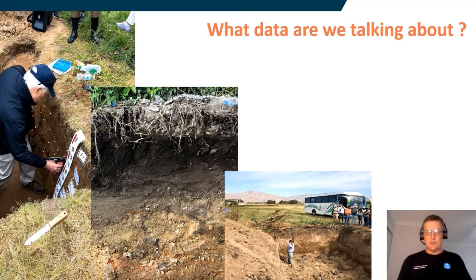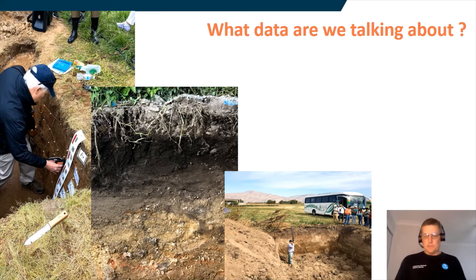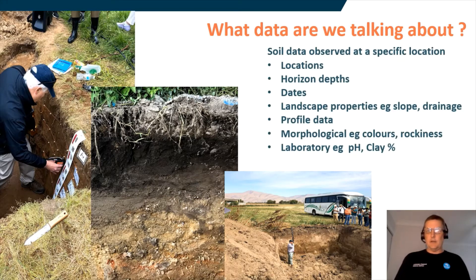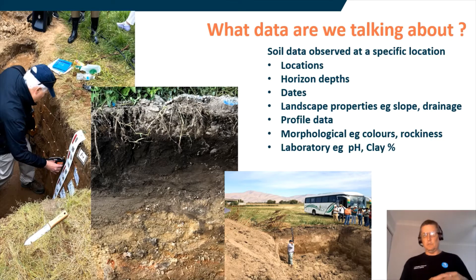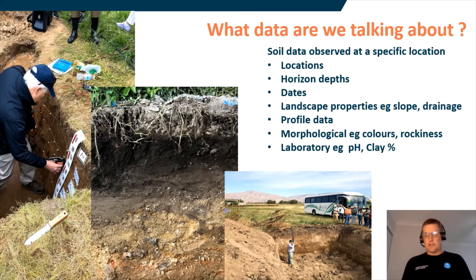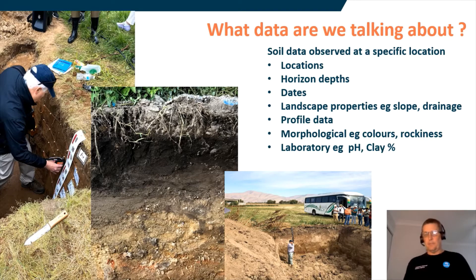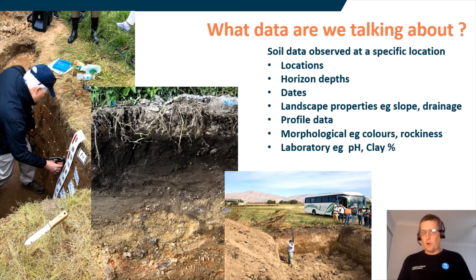So when we say soil data, what are we actually talking about? There's raster data, there's polygon data used to make maps. But today, when we talk about soil data, we're talking about soil information collected at a specific location. We record locational data, horizon depth, dates of observations, landscape properties like slope and drainage, and profile data being morphological data — things such as colour and rockiness — through to laboratory data, things like pH and clay percentage.